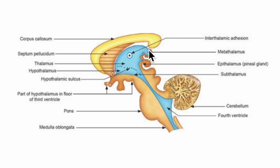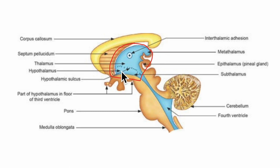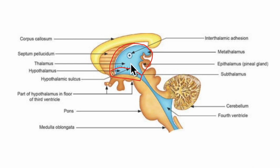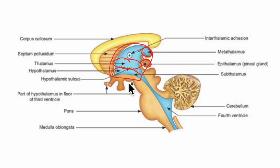Let's consider the left half of the diencephalon, lying on the left side of the third ventricle. Here we have the hypothalamic sulcus — this is the dorsal part and this is the ventral part. Looking at the dorsal part of the diencephalon, we have the thalamus as pointed out right here. Then we have the metathalamus right here and the epithalamus right here.